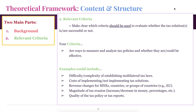Some examples of criteria could be the difficulty or complexity of establishing multilateral or cooperative tax laws, the cost of implementation or revenue changes for corporations or the EU, how much tax evasion there is or how much tax evasion would increase or decrease depending on whether a solution would be implemented, or the quality of the tax policy or tax reports. These are just a few examples — you have a lot of options depending on which assignment you chose and which specific area you're focusing on.